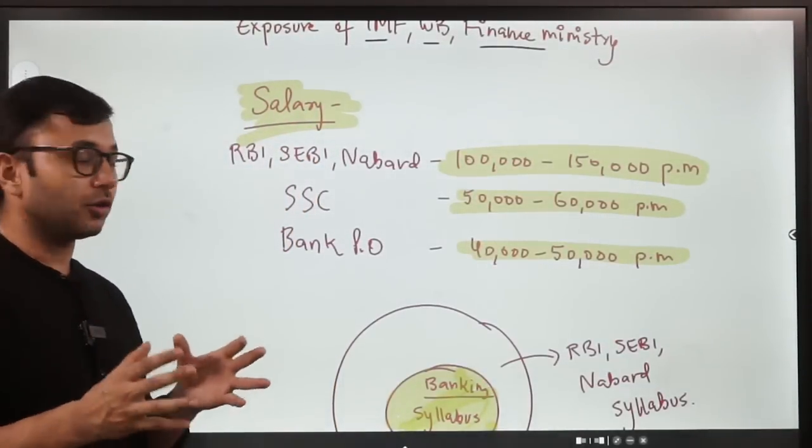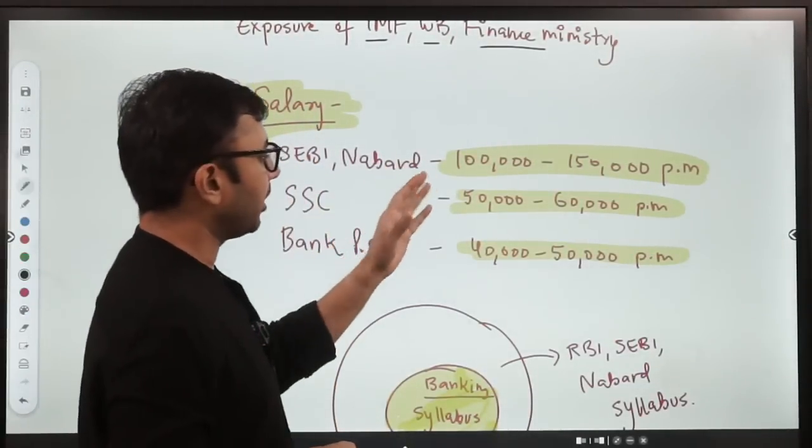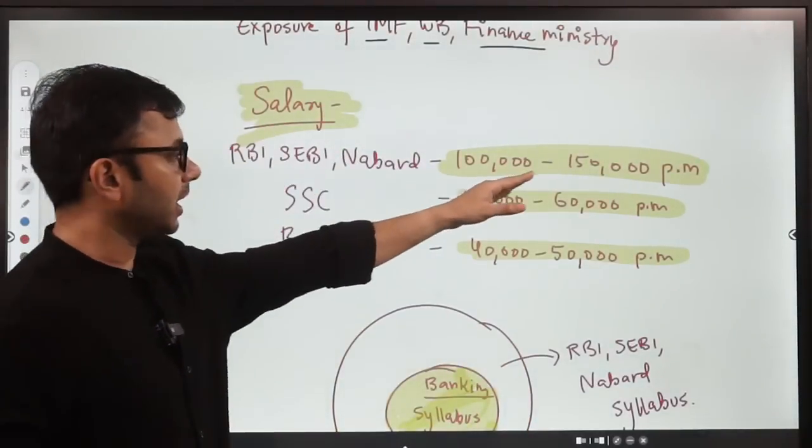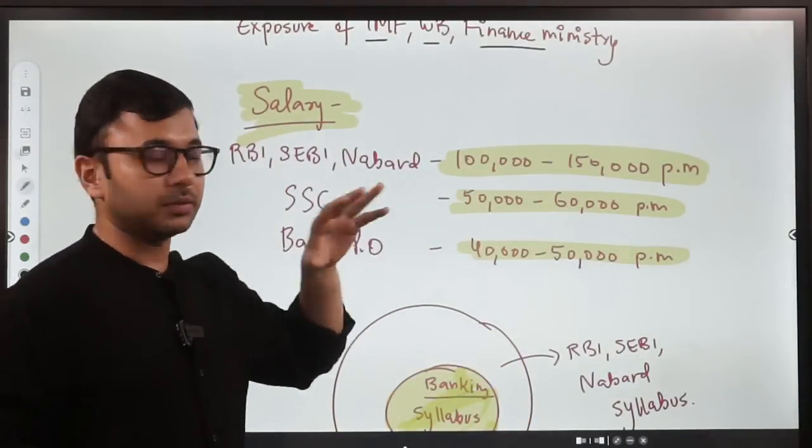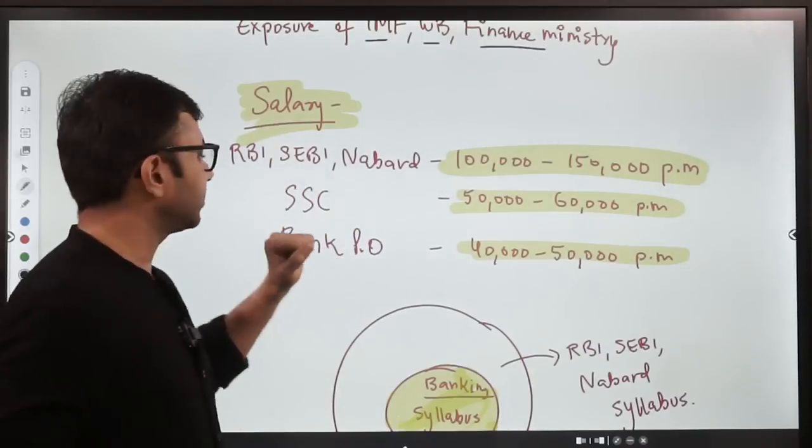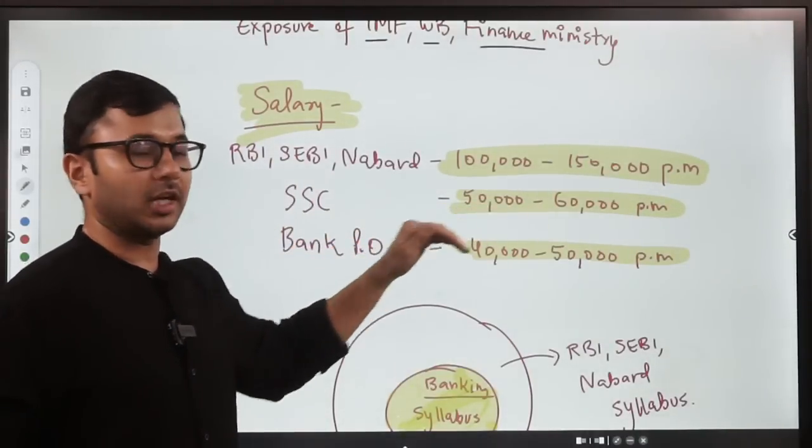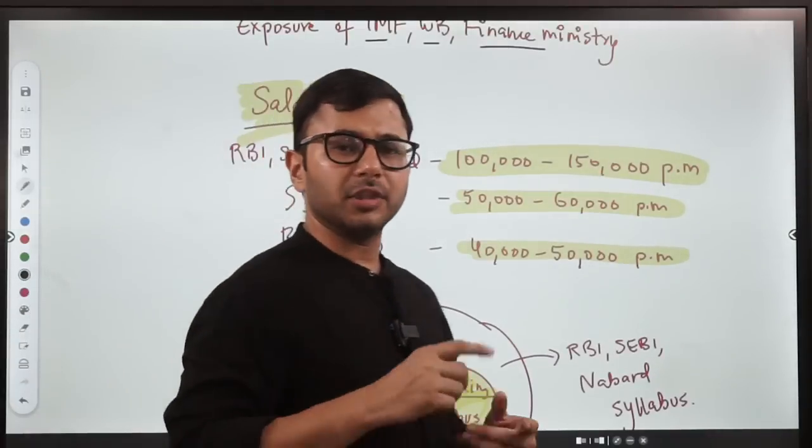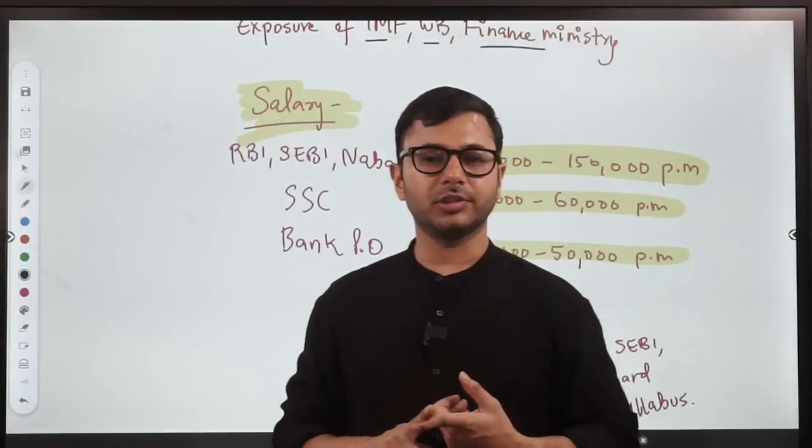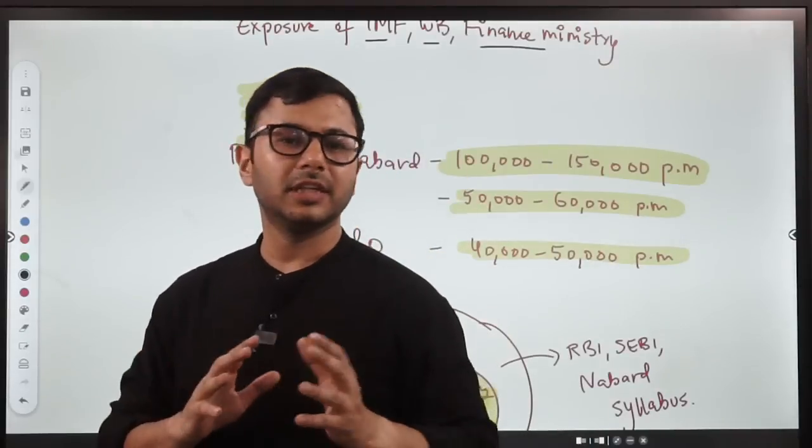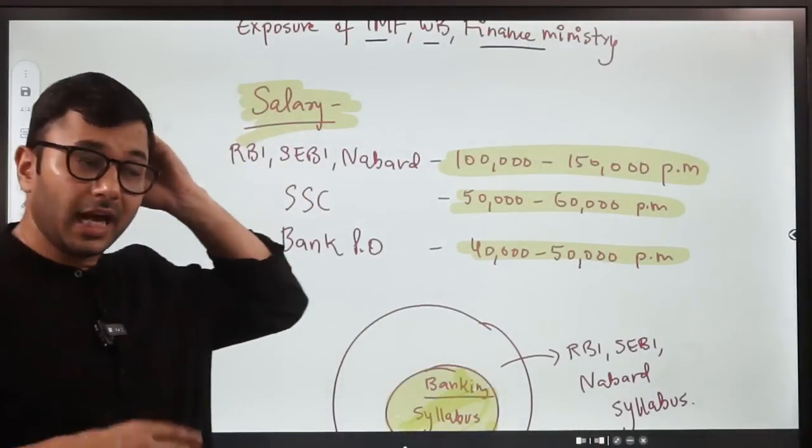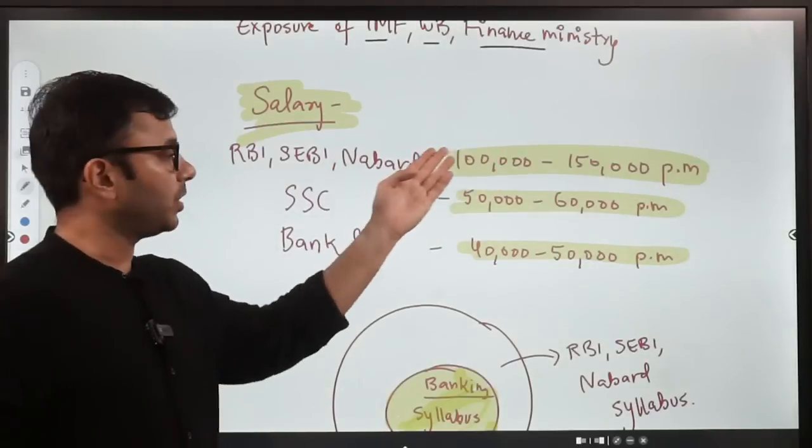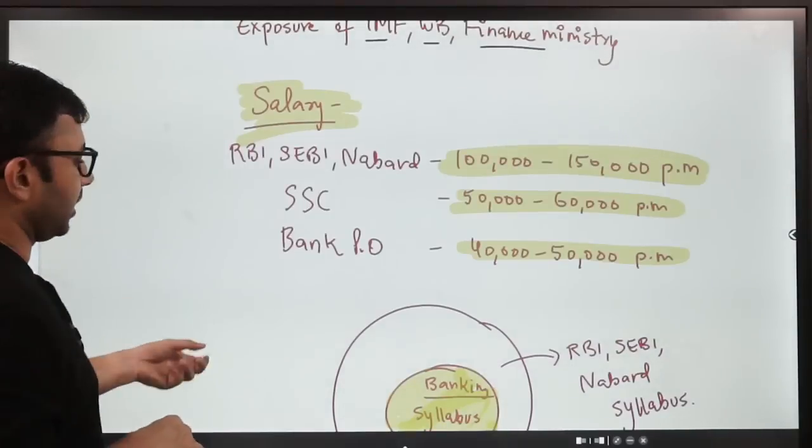Salary, which is very important for a lot of students. RBI से भी NABARD को अगर हम करें compare SSC और Bank PO से. So, you get a salary of 1,00,000 to 1,50,000 per month in these three organizations. SSC में 50 से 60,000 है. Average और Bank PO में 40 से 50,000 है. If the ratio of vacancies is the same, the syllabus is let's say 50% same and if you're preparing for Bank PO or SSC, then why not prepare for these exams as well? Salary में difference आपको clearly दिख रहा है.